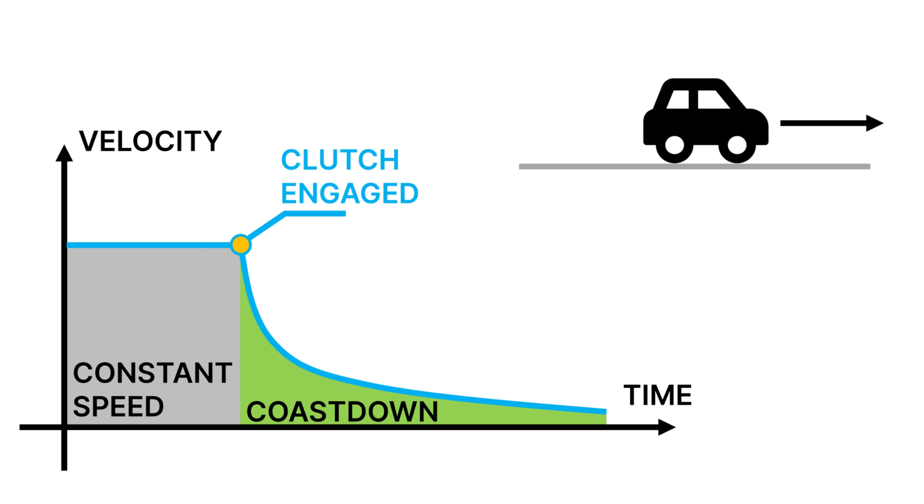Now, the principle of coast-down testing is fairly simple. You're going at a constant speed with your vehicle and then you engage the clutch to let the vehicle slow down. By monitoring the distance covered over time, you can then calculate the mechanical resistance and aerodynamic resistance.